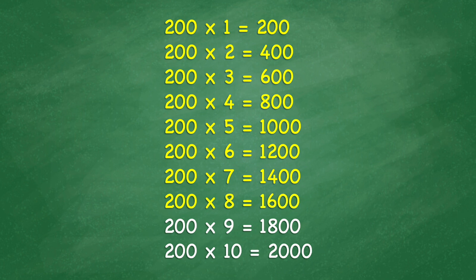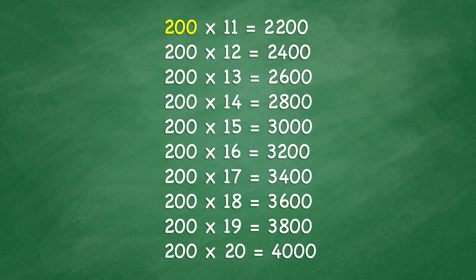200 times 8 equals 1,600. 200 times 9 equals 1,800. 200 times 10 equals 2,000. 200 times 11 equals 2,200. 200 times 12 equals 2,400. 200 times 13 equals 2,600. 200 times 14 equals 2,800. 200 times 15 equals 3,000.